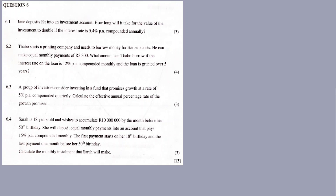So like 6.1 — a person deposits x rands into an investment account. How long will it take for the value of the investment to double if the interest rate is compounded annually? So we are looking for the value of n. It's compounded annually.